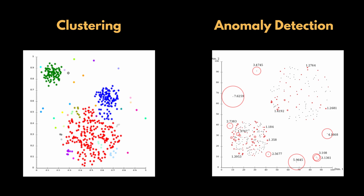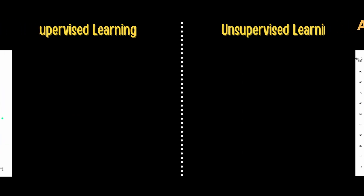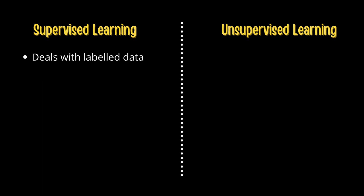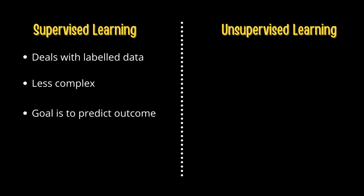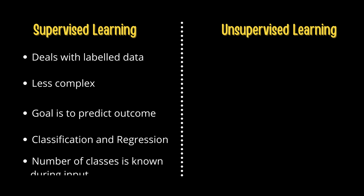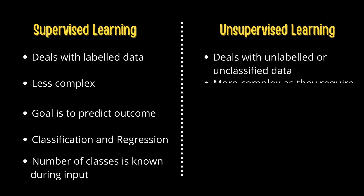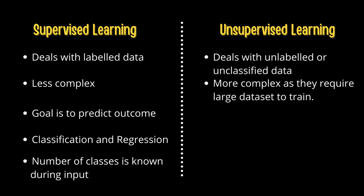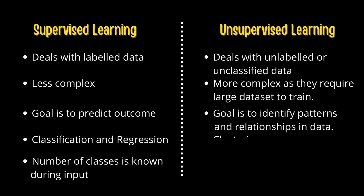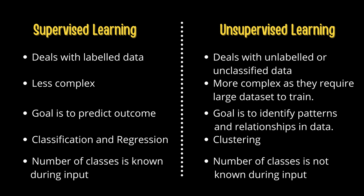To summarize the difference: supervised learning deals with labeled data, is less complex, and its goal is to predict the outcome — using classification and regression — with the number of classes known during input. Unsupervised learning deals with unlabeled or unclassified data, is more complex as it requires a large dataset to train, and its goal is to identify patterns and relationships in data through clustering, with the number of classes not known during input.